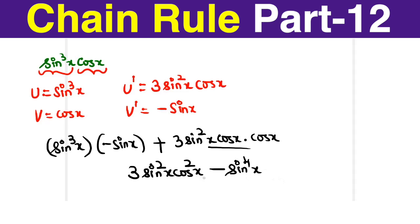I can take the sin square x outside. This is sin square x into 3 cos square x minus sin square x. This simplification is not exactly mandatory. Either you can stop with this as an answer or with this as an answer.